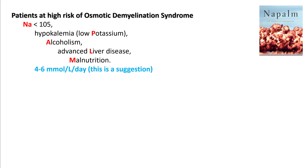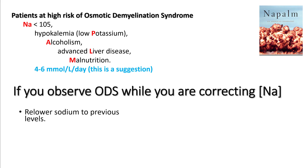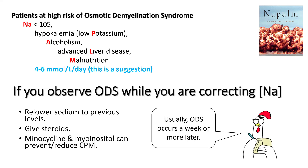A few patients are at high risk of developing osmotic demyelination syndrome. These include patients with severe hyponatremia, hypokalemia, alcoholism, liver disease, and malnutrition. For these patients, try to set a lower correction target — usually 4 to 6 mEq per day. If you observe symptoms of ODS while correcting sodium, re-lower sodium to previous levels and give steroids. Some studies have used minocycline and myoinositol to prevent central pontine myelinolysis. Note that symptoms of osmotic demyelination typically occur a week or more later.